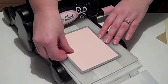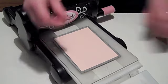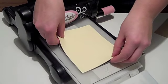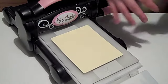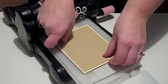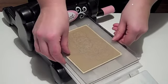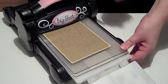Cardstock cut to the size you would like, followed by the vanilla mat, and then the tan mat. One more cutting plate to create my sandwich, and then just roll it on through.